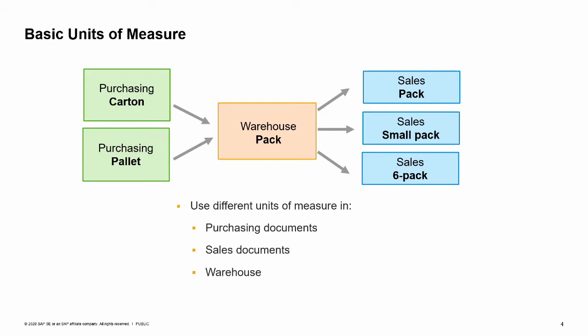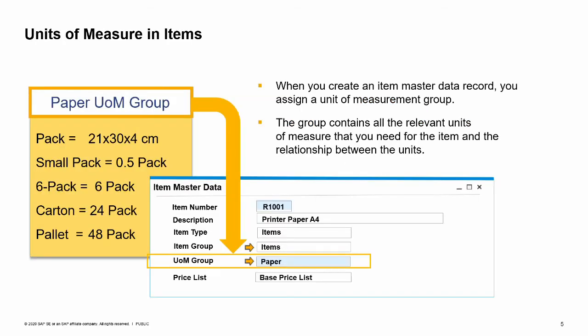The group 'manual' is provided for upgraded companies and used as the default until another group is assigned. When you create an item master data record, you assign a unit of measurement group. The group contains all the relevant units of measure that you need for the item, as well as the relationship between the units. In our example, we can assign the paper UOM group because it has all the measures we need.